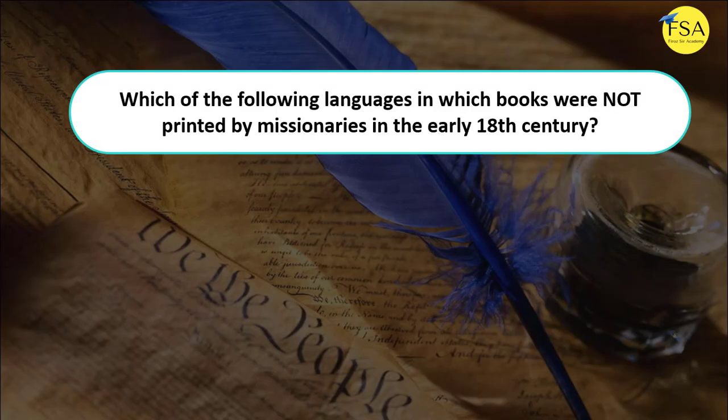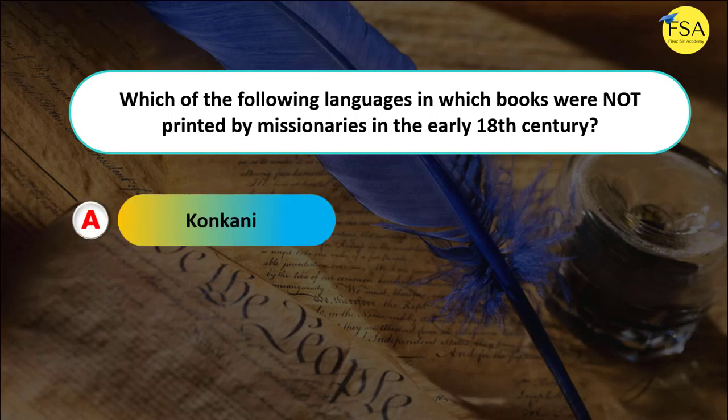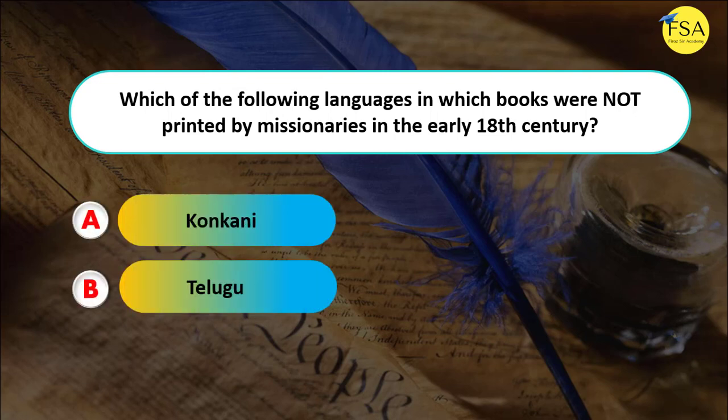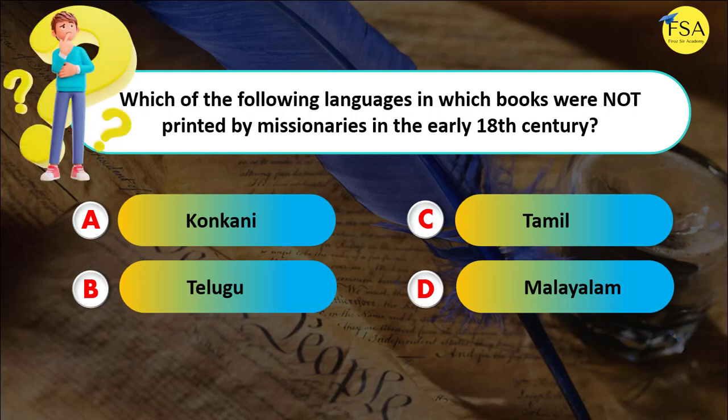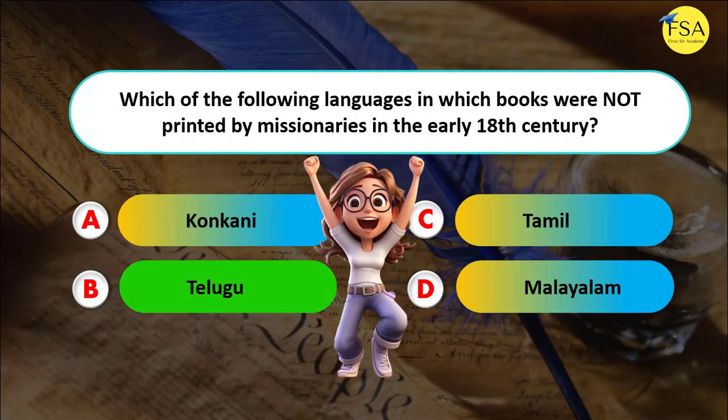Question 4: Which language were books NOT printed in by missionaries in the early 18th century? Options: Konkani, Telugu, Tamil, Malayalam. In the 18th century, Portuguese missionaries printed books in Konkani, Tamil, and Malayalam, but they did not publish any books in Telugu. So the answer is Option B, Telugu.